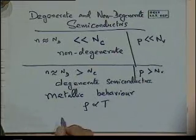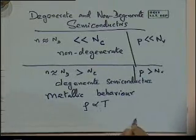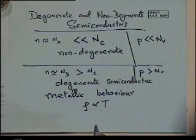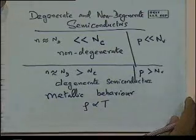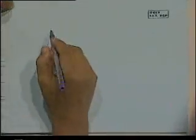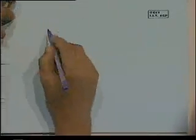In a degenerate semiconductor, rho becomes proportional to T, or conversely sigma is proportional to 1/T, as we saw for metals. In this case we cannot use the Boltzmann approximation anymore. What is happening is that we have such a high number of donors that they begin to interact with each other.